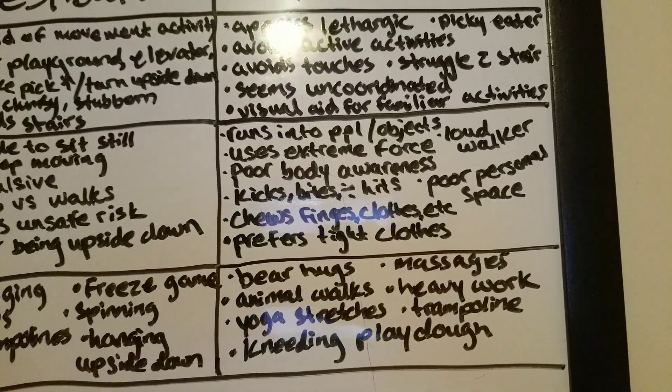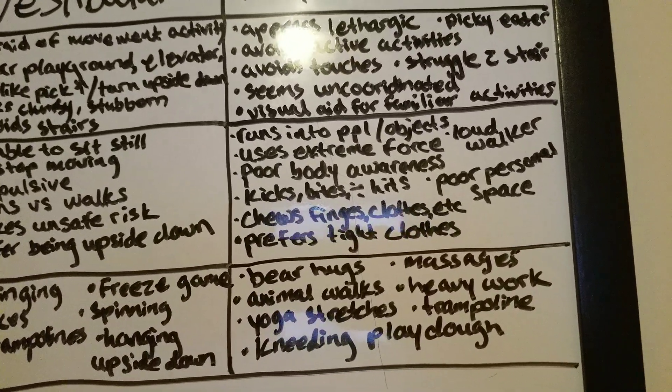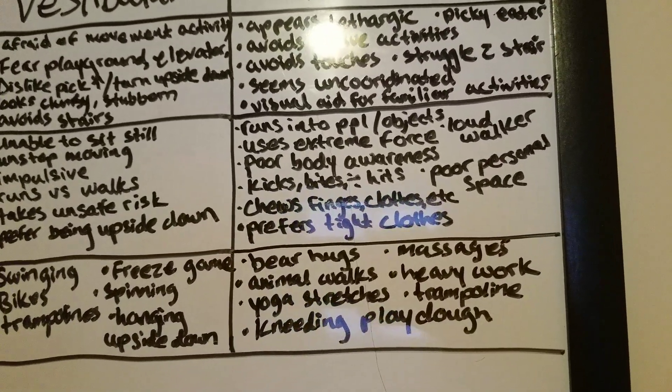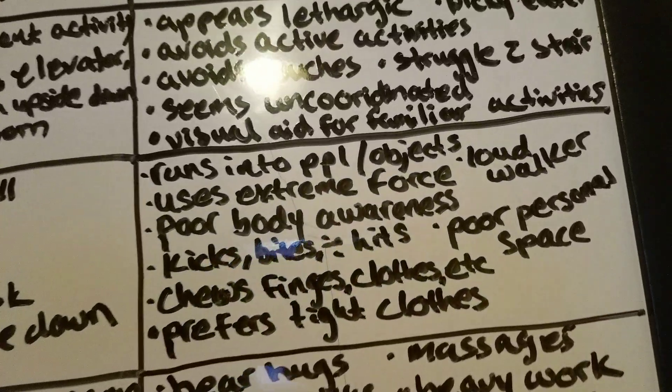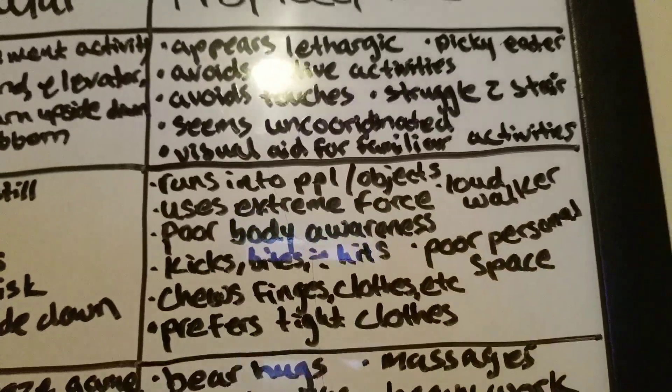They avoid touches. They don't want anyone to touch them. There's no hugs. They may seem uncoordinated. They also require visual aid for familiar activities.